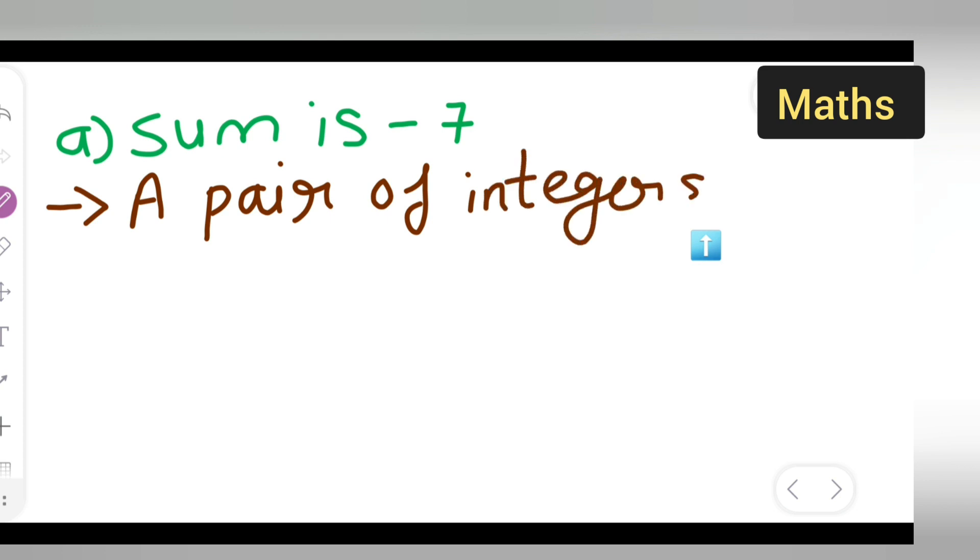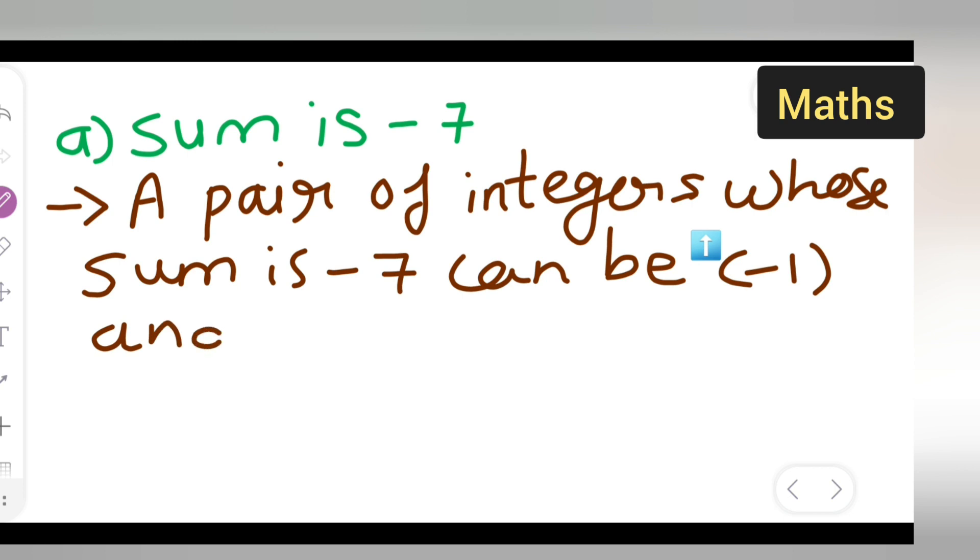A pair of integers whose sum is minus 7 can be minus 1 and minus 6.